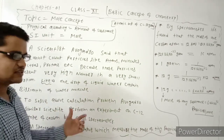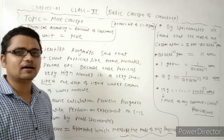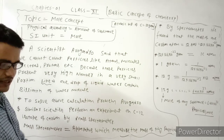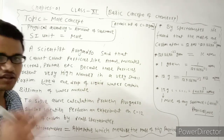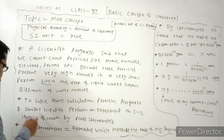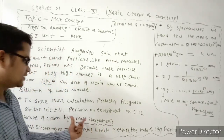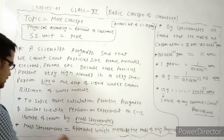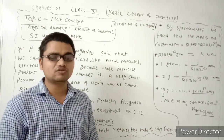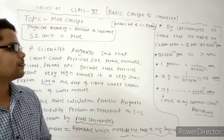To solve all these problems, Avogadro and other scientists performed an experiment using carbon-12, an isotope of carbon. Carbon-12 is the most naturally abundant isotope of carbon. They used an apparatus called the mass spectrometer, which is a very important apparatus that measures the mass of small particles — it can observe and measure the mass of particles.